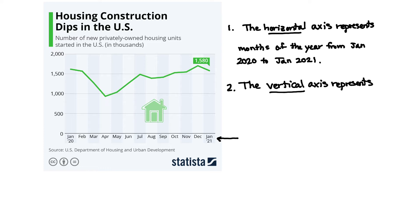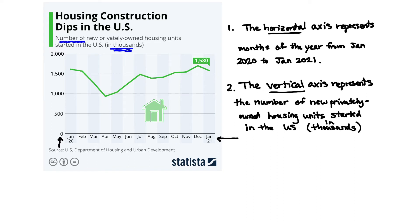What about the vertical axis? The vertical axis has numbers on it, and from the description we can determine that it represents the number of new privately owned housing units started in the U.S. in thousands. That's important — when you see the number 500, it's actually representing 500,000.